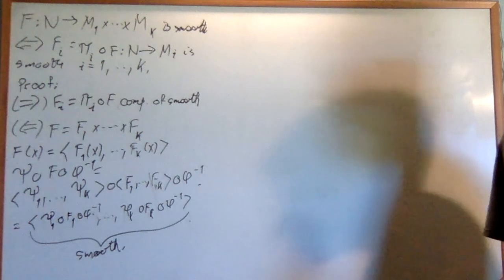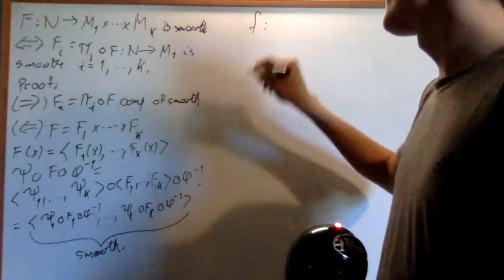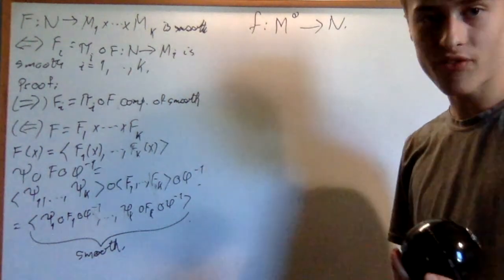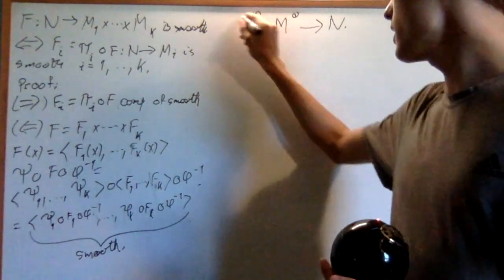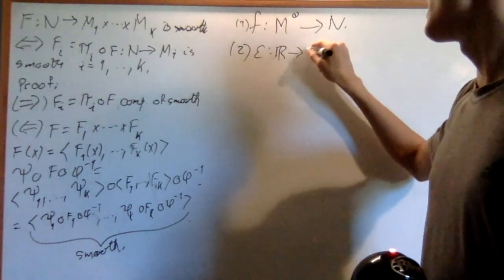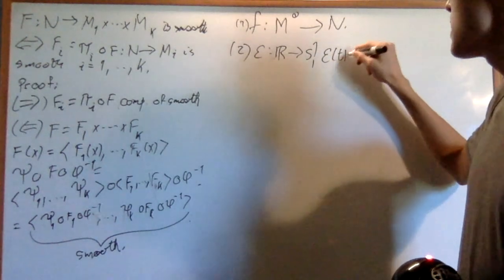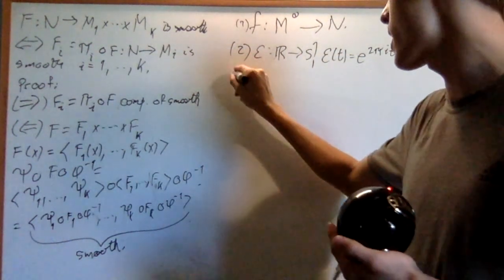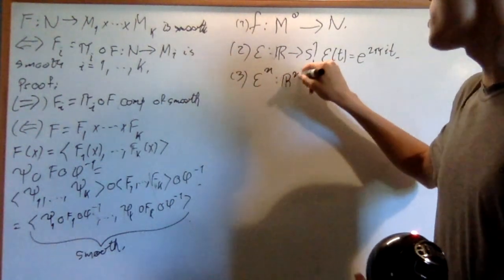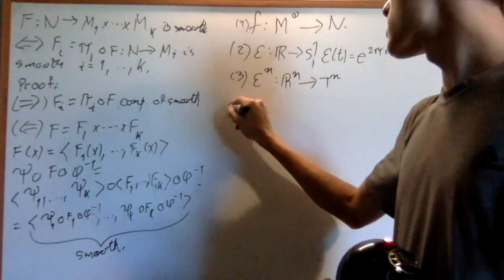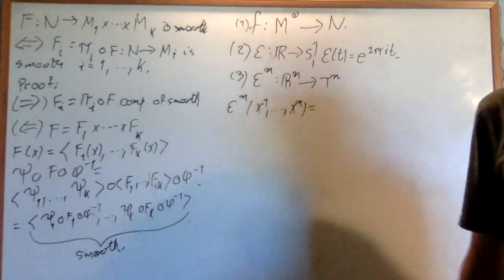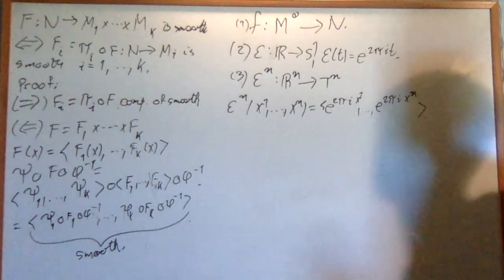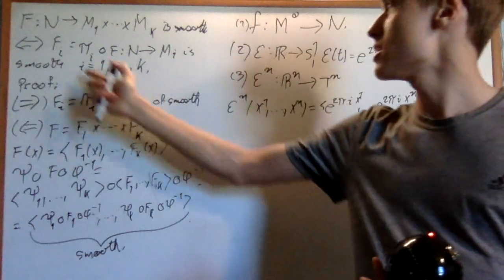Some nice examples. First, any map F from a zero-dimensional manifold into any other manifold is smooth, since a zero-dimensional manifold is just a finite set with the discrete topology. Second, the map ε from ℝ into S¹ defined by ε(t) = e^{2πit} — going around the circle — is a smooth map. Third, ε_N from ℝ^N into the N-torus defined by ε_N(x_1, …, x_N) = (e^{2πix_1}, …, e^{2πix_N}) is smooth as the product of those maps.